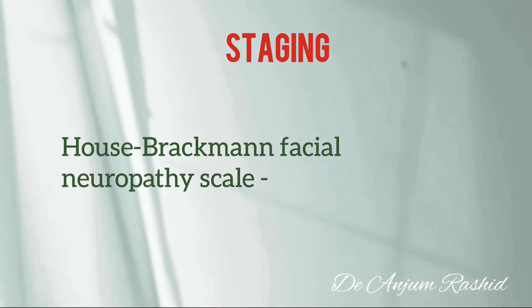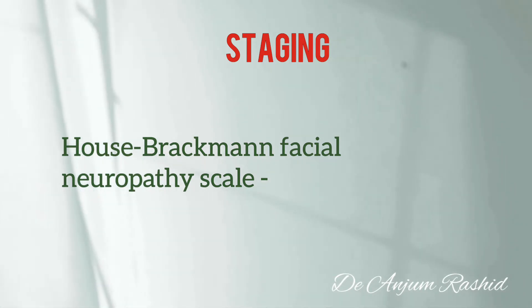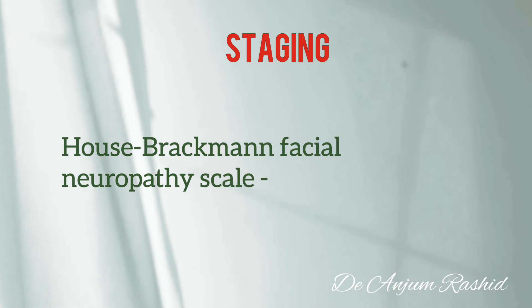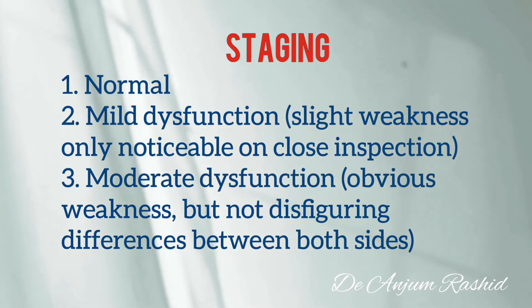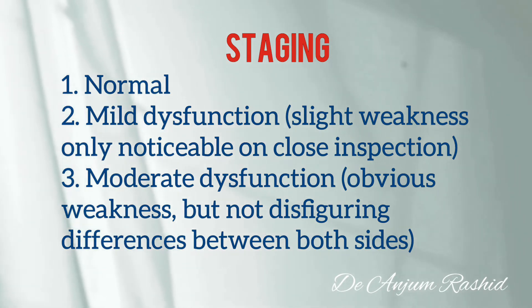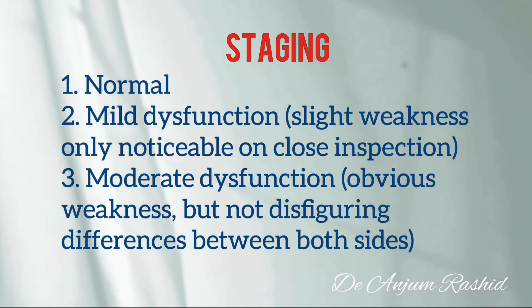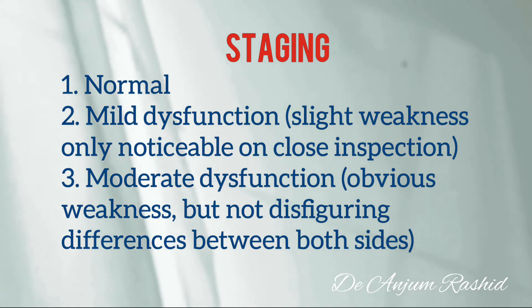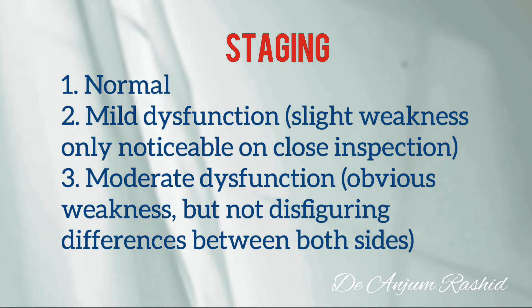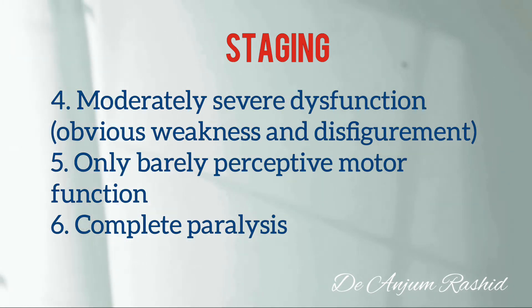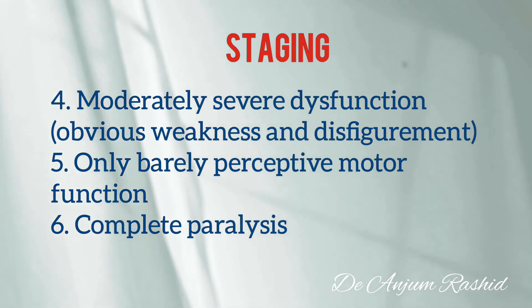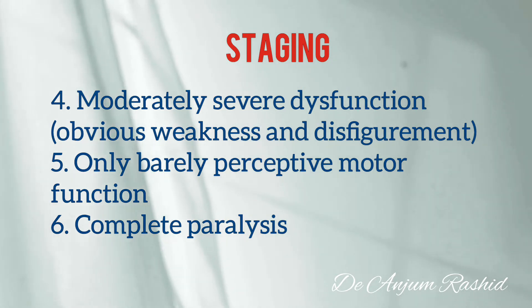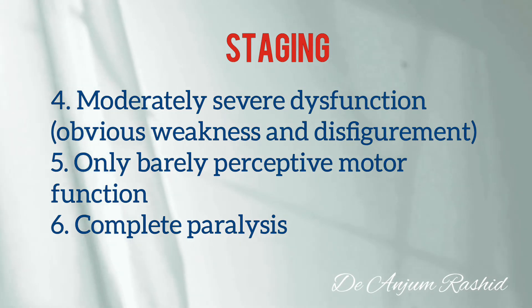Several scales have been developed to quantify the degree of facial muscle weakness. The House-Brackmann scale is the most commonly used. Stage 1 is normal; Stage 2 is mild dysfunction with slight weakness noticeable only on close inspection; Stage 3 is moderate dysfunction with obvious weakness but not disfiguring; Stage 4 is moderately severe dysfunction with obvious weakness and disfigurement; Stage 5 has only barely perceptible motor function; and Stage 6 is complete paralysis.